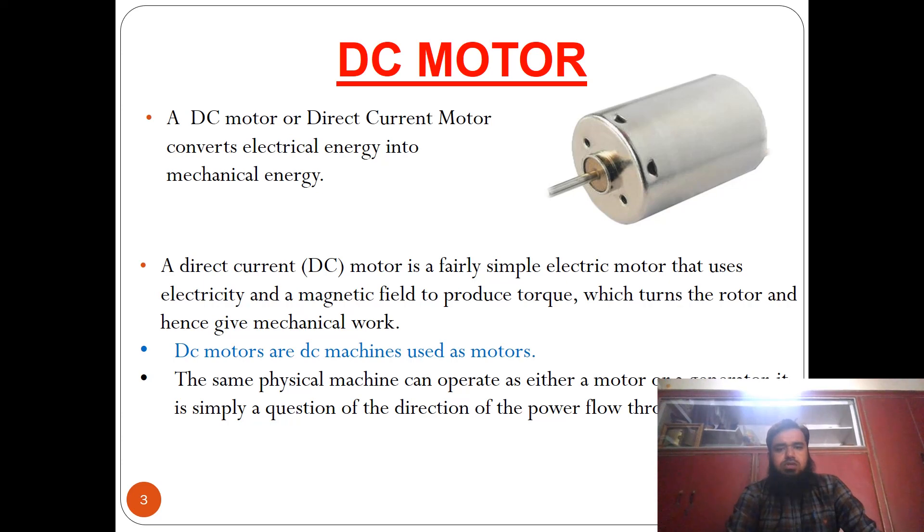A DC motor, or Direct Current motor, converts electrical energy into mechanical energy. It is a fairly simple electric motor that uses electricity and a magnetic field to produce torque, which turns the rotor and gives mechanical work.